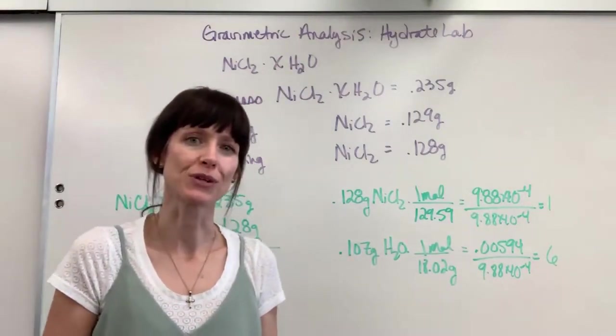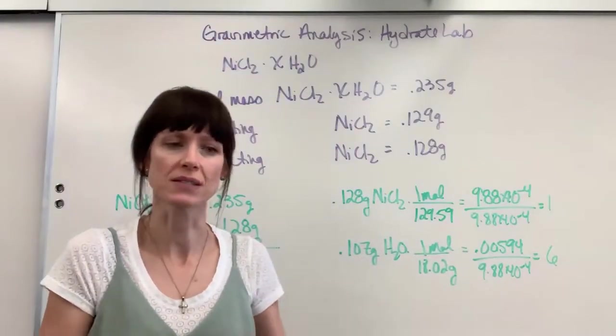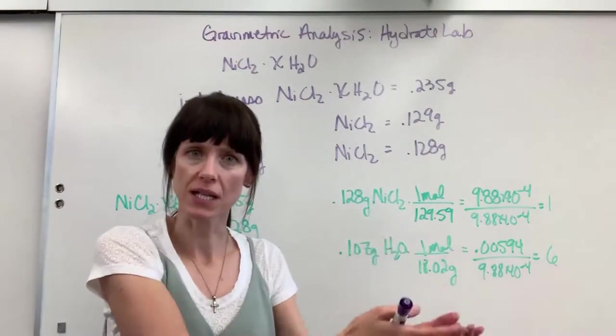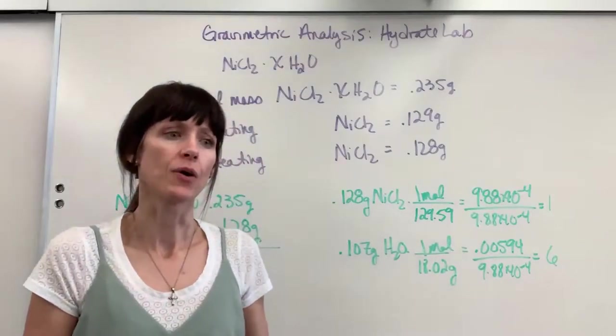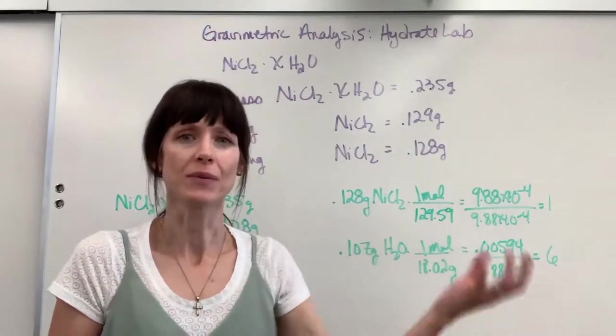Gravimetric analysis is using the mass or the loss of mass, so change of mass. Either we're going to collect something and take that final mass, or we've evaporated something, we've lost a gas, and then we take a final mass.